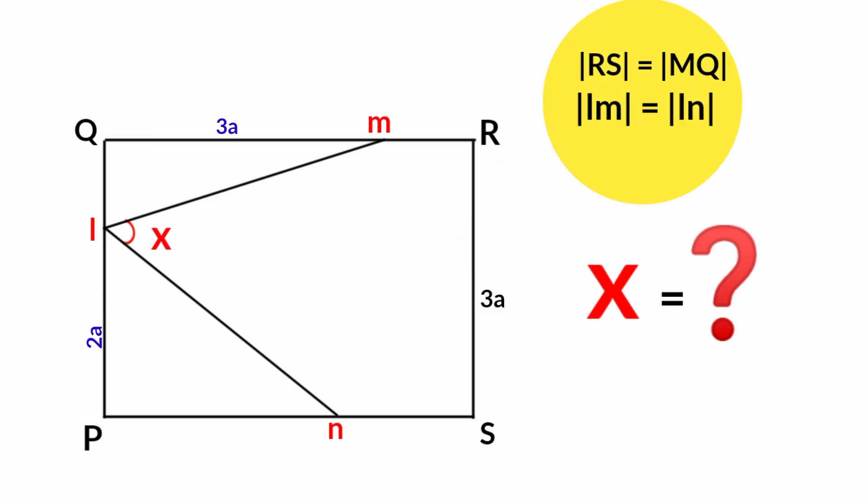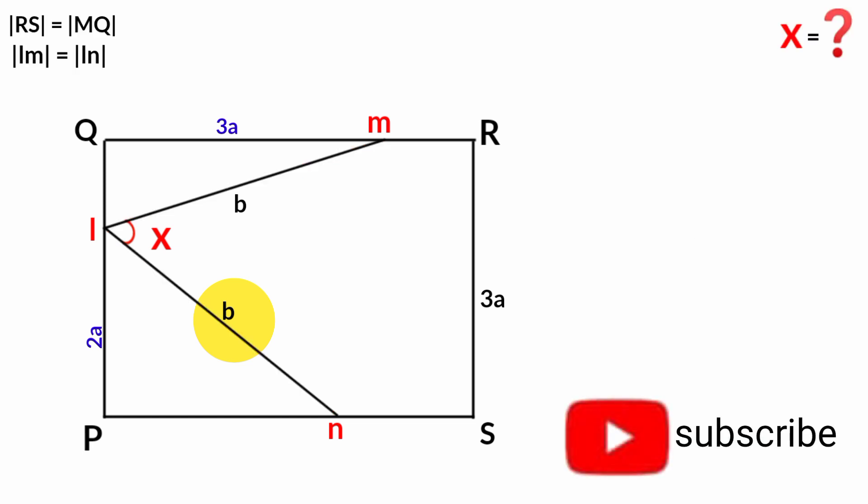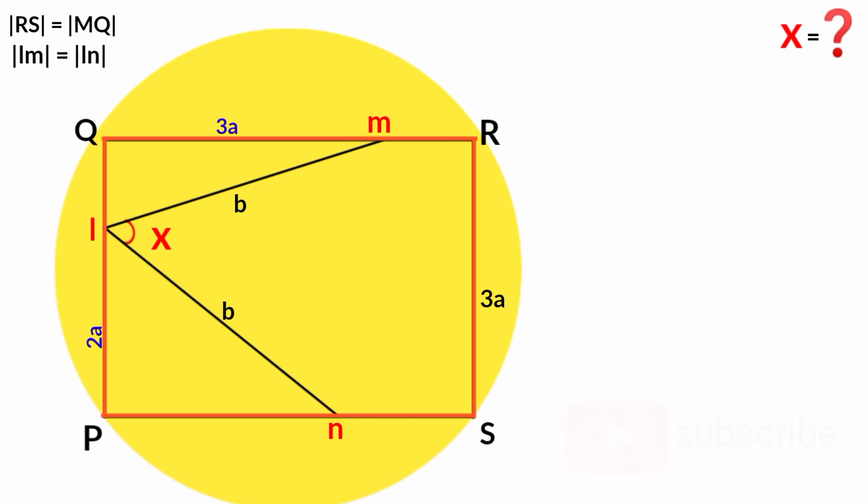And they said that line LM and side LN are equal in length. Let's assume their lengths to be b. Now, since PQRS is a rectangle, we know opposite sides of rectangles are equal in length. So since this is 3a, line PQ must also be 3a in length. But since we have this side as 2a, this must be 3a minus 2a, which is a.